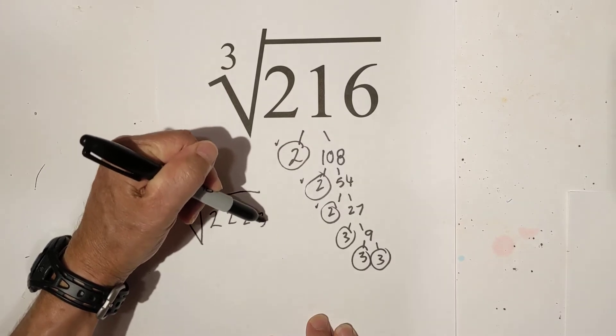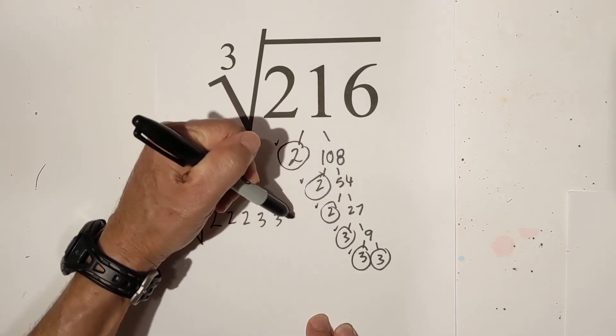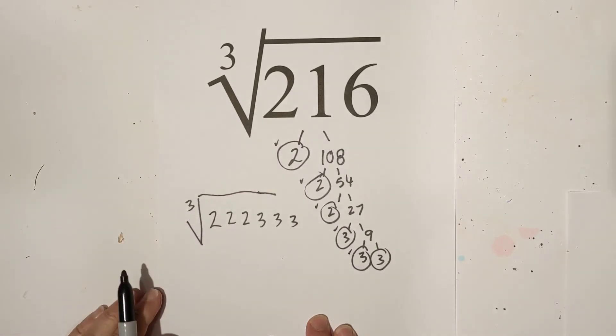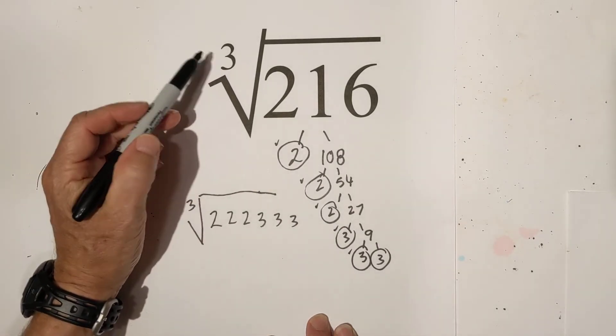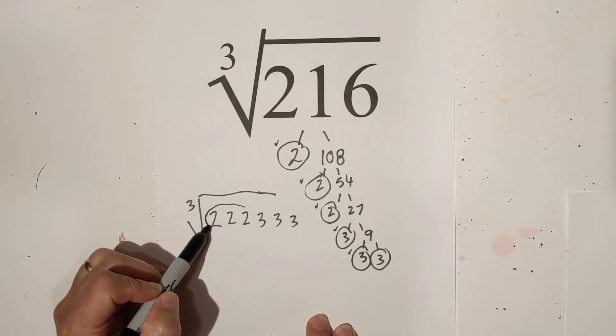And you can use this same technique on any number. Okay so now what I do next, since it is a cube root, I look for triplets and I can pull them out.